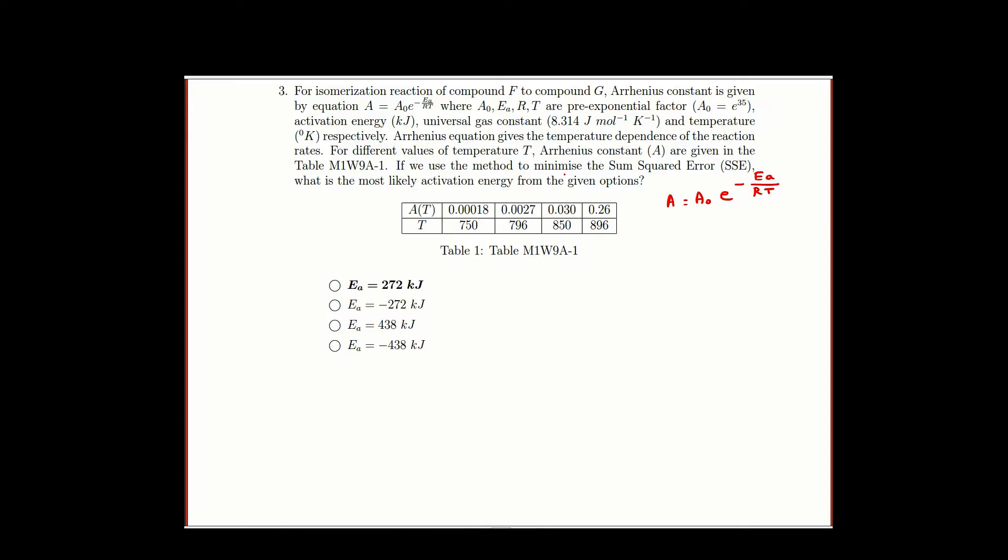If we use the method to minimize the sum squared error which is SSE, what is the most likely activation energy from the given options. So Ea is the activation energy.